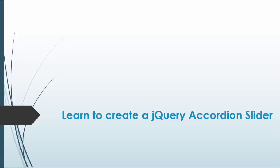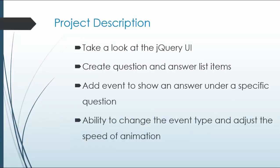In this project, we're going to do something relatively simple. We're going to build an FAQ accordion slider. We'll have a list of questions and answers. The answers will be hidden initially, and then we'll click on the question and the answer will slide down with a little slide-down animation. So that's what we'll be building.